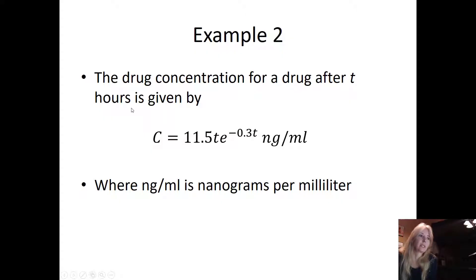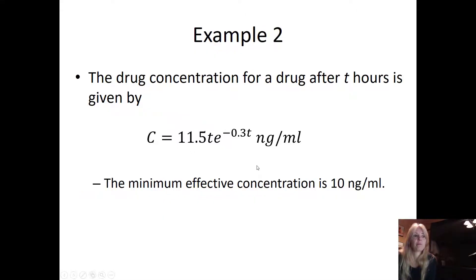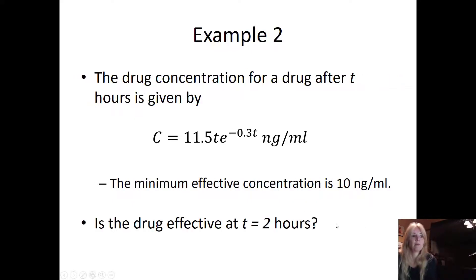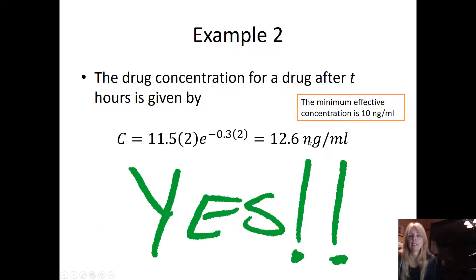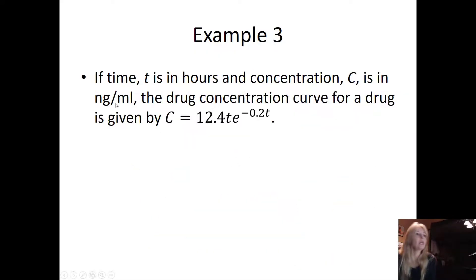Next example: the drug concentration for the drug after t hours is given by this function. How can I tell immediately that this is the surge function? I see a linear piece and then I see the exponential decay. The minimum effective concentration is 10 nanograms per milliliter. Is the drug effective at t equals two hours? Just simply plug in two and see if it's above my minimum effective level, and yes it is.